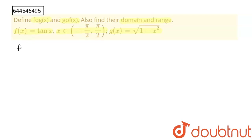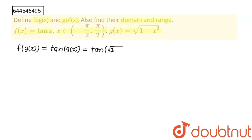First of all I am going to find f(g(x)). In function f(x), I am going to put g(x), so this will become tan(g(x)), and this will be equal to tan(√(1 - x²)). Now, in f(x), x belongs to (-π/2, π/2), so this g(x) should be between -π/2 and π/2.